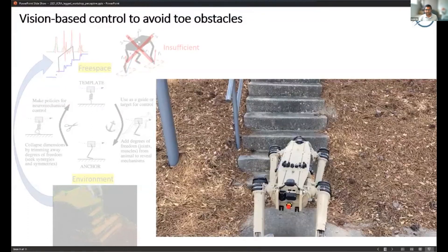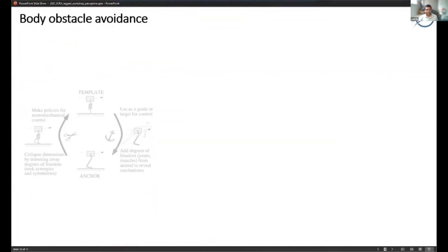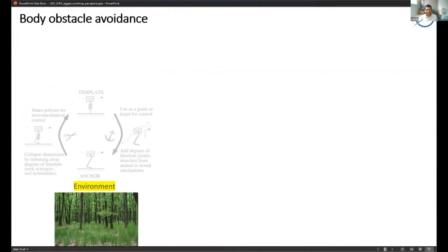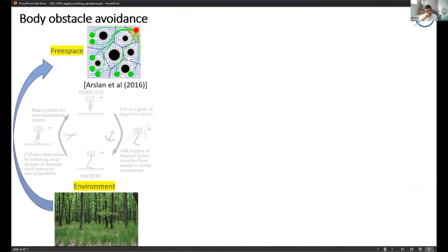Similarly to the toe obstacle avoidance, you can think about when the robot's moving through a forest or there are a bunch of obstacles in the way - we need to figure out how to project these obstacles also into the configuration space of the robot. We use a simplified idea of treating the environment as a union of convex obstacles and using simple algorithms inspired by some research.